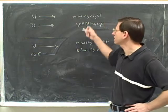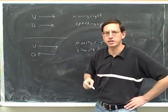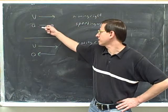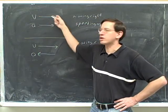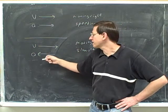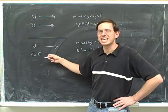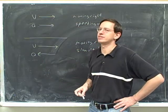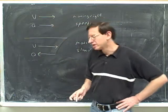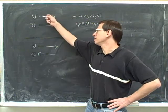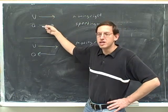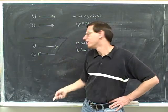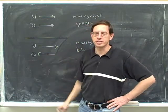We know we're speeding up because the acceleration is pointing in the same direction as the velocity. A good way to express that in physics is to say that here the acceleration is parallel to the velocity. And here we would say the acceleration is anti-parallel to the velocity. These two vectors would be called parallel, and these would be called anti-parallel — pointing in the opposite direction.